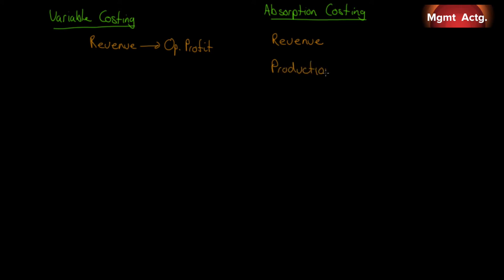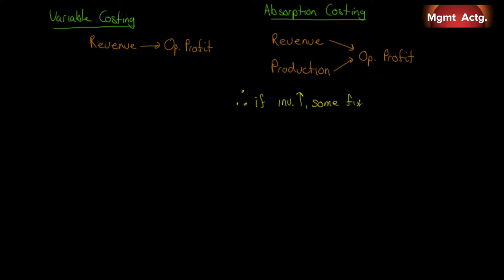If we produce more than what we need, we can charge some of that fixed manufacturing overhead cost in each unit and defer it into inventory for some later period. And remember, that fixed manufacturing overhead component does not change whether we produce one unit or 1,000 units. So the more we produce, we have the illusion of lower cost of goods sold. So if inventories increase over a period of time, some fixed manufacturing overhead cost is deferred into inventory — in other words, it doesn't hit the income statement.